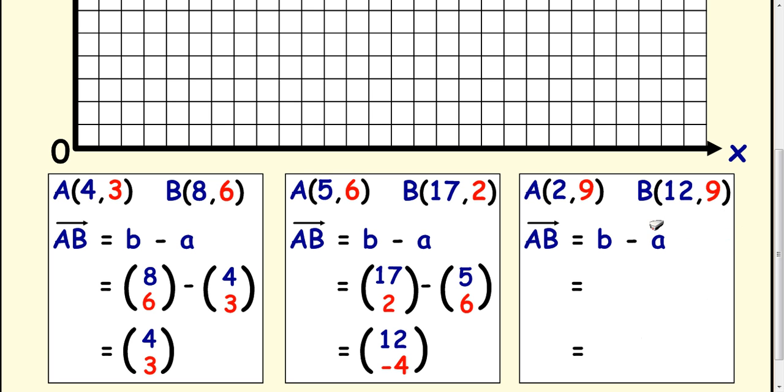Last one, same idea: b minus a. So (12,9) take away (2,9) is going to be (10,0).